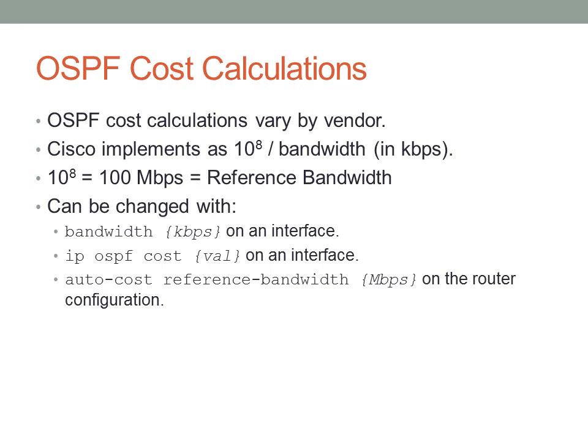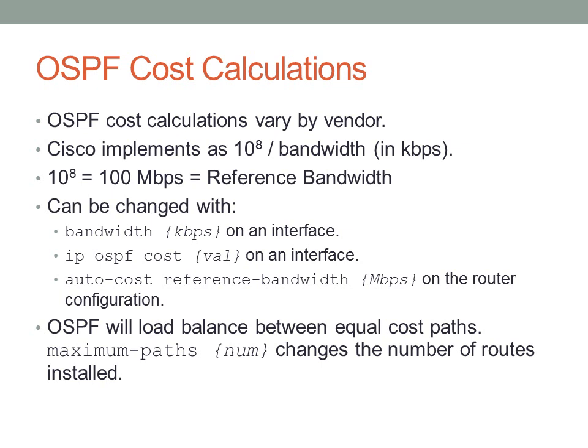Bandwidth can be changed directly on an interface with the bandwidth command, or you can configure it with 'ip ospf cost' followed by the actual cost value — the first plugs into the equation to determine OSPF cost, while the second lets you directly write the OSPF cost you want on the interface. The 'auto-cost reference-bandwidth' command adjusts the reference bandwidth (in Mbps), which is useful if you want gigabit links to take precedence over Fast Ethernet links. OSPF will load balance between equal cost paths, and you can adjust the number of maximum paths with the 'maximum-paths' command.